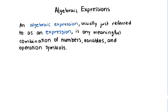In this video I'd like to talk about algebraic expressions. The way we translate situations in the real world into mathematics is by creating what we call algebraic expressions. An algebraic expression — which we usually just refer to as an expression — is any meaningful combination of numbers, variables, and operation symbols. Operation symbols represent things like plus, minus, times, and division, and maybe also grouping symbols like parentheses.